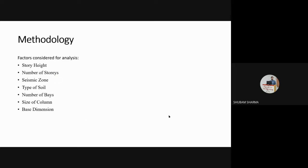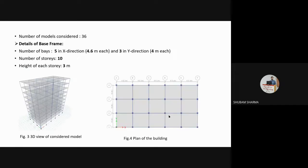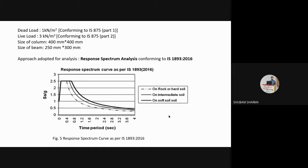Missing critical parameters include number of stories, seismic zone, type of soil, column size, and base dimension. The study considers these factors. A total of 36 models were considered, with a basic model having 5 bays in the X direction at 4.6 m bay length, 3 bays in the Y direction at 4 m each, and a total building height of 30 m with 10 stories at 3 m per story. Dead and live loads are per IS 875, and column and beam sizes are fixed per IS 13920.